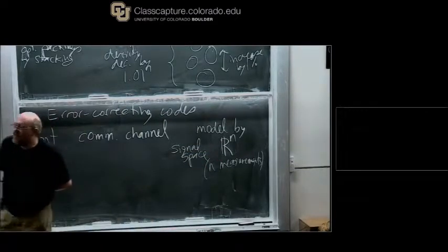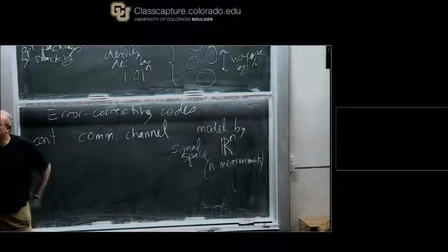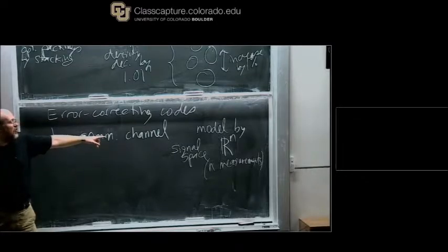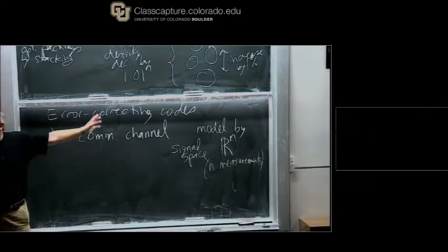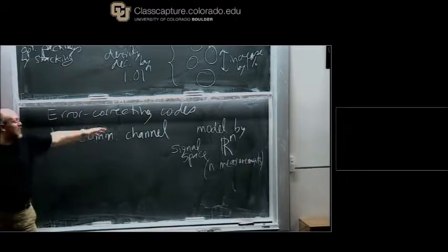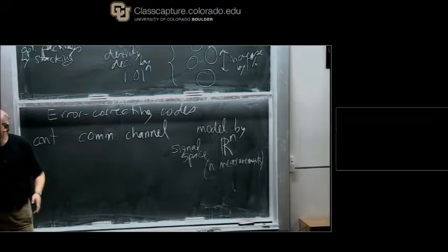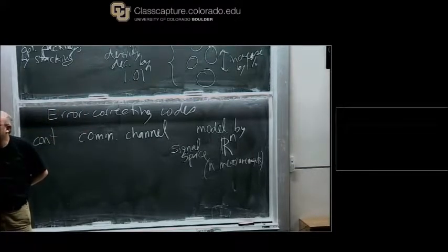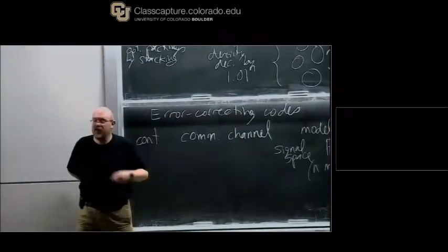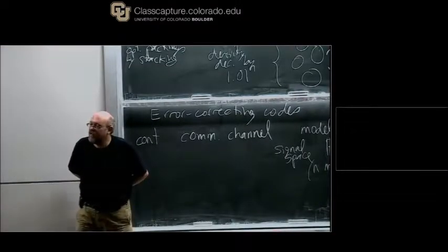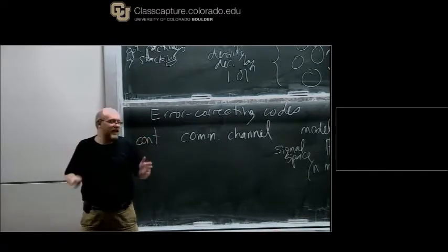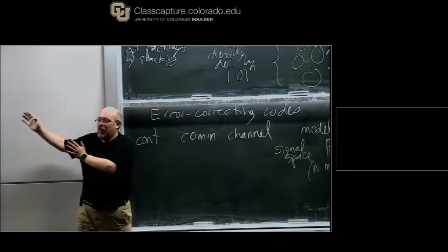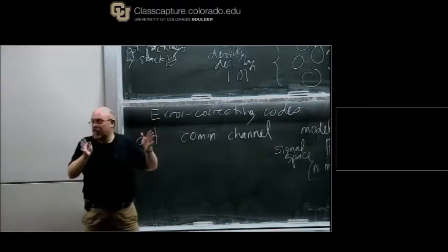The n numbers represent n measurements at any instant — you're going to send a stream of signals, one at a time, each described by a vector of length n. The big problem in communication theory is noise. There's no interesting theory without it. All real-world channels are noisy: the received signal is never exactly what you sent, but some perturbed version of it.